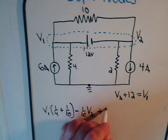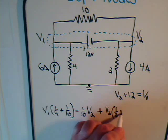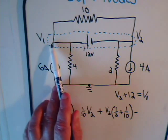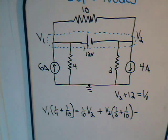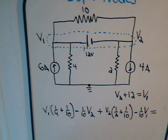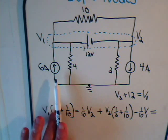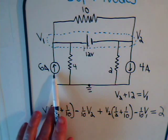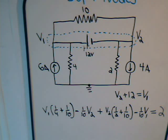We write it all together in one equation for the supernode: plus V2 times (1/2 plus 1/10), and since the other end of the 10 ohm resistor is at voltage V1, we subtract 1/10 times V1. That equals the net current: there's 6 amps going into the supernode on one end, and 4 amps leaving on the other, giving a net of 2 amps flowing in. Since current is flowing in, we write 2 as a positive number on the right side.